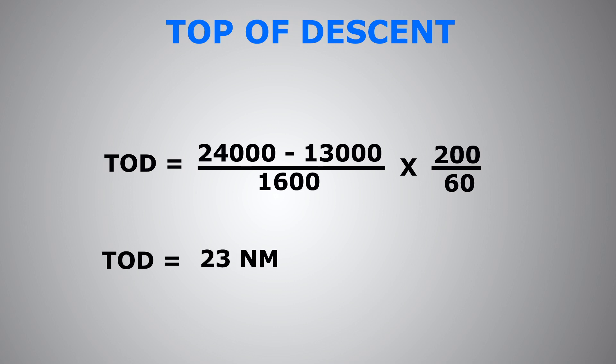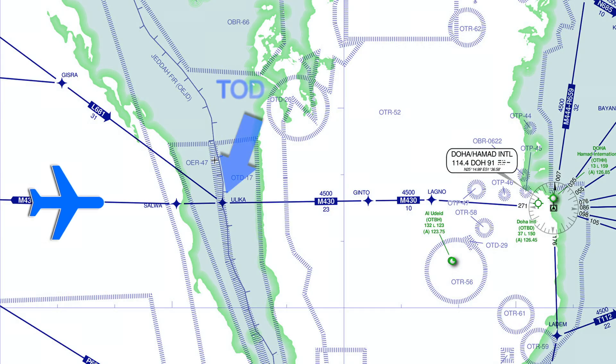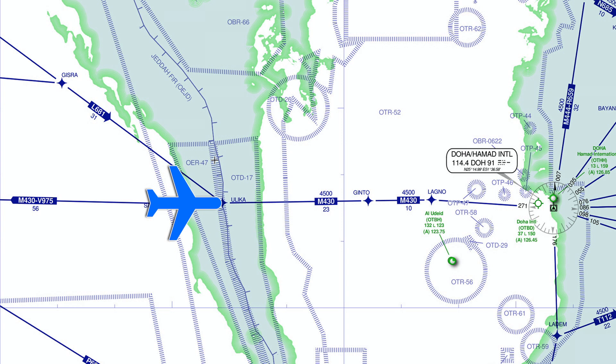So 23 nautical miles before Ginto, we should start our descent maintaining a rate of descent of 1600 feet per minute, and a ground speed of 200 knots.